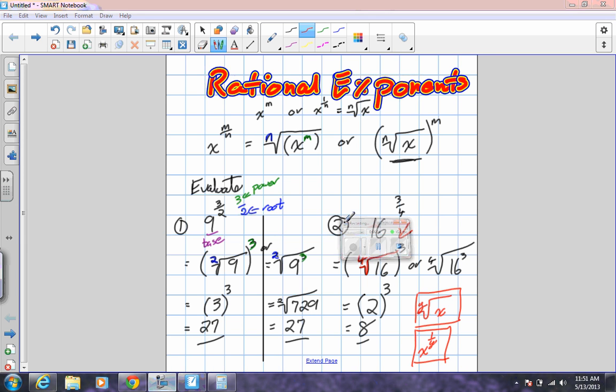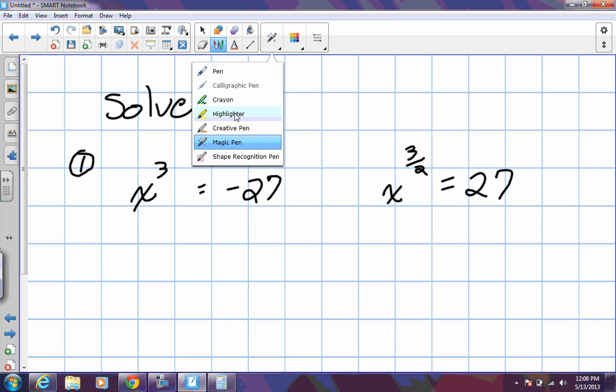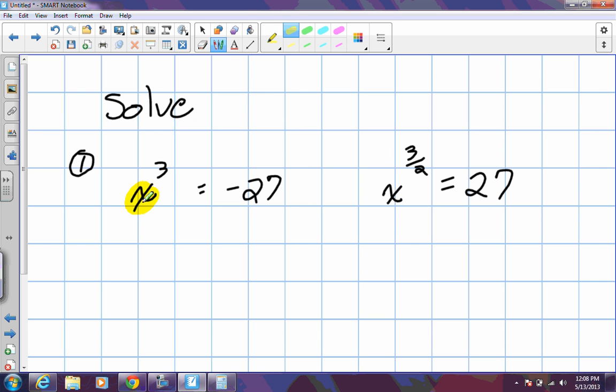We're going to go through a second example here. And these examples, we're going to actually solve for the base. So we don't know what this X value is. So just like when we were doing our algebra before, we want to isolate this variable. Now this is strictly a power. And if I made it a fraction, how can we make this value a fraction? Put it over what? 1, that's right.